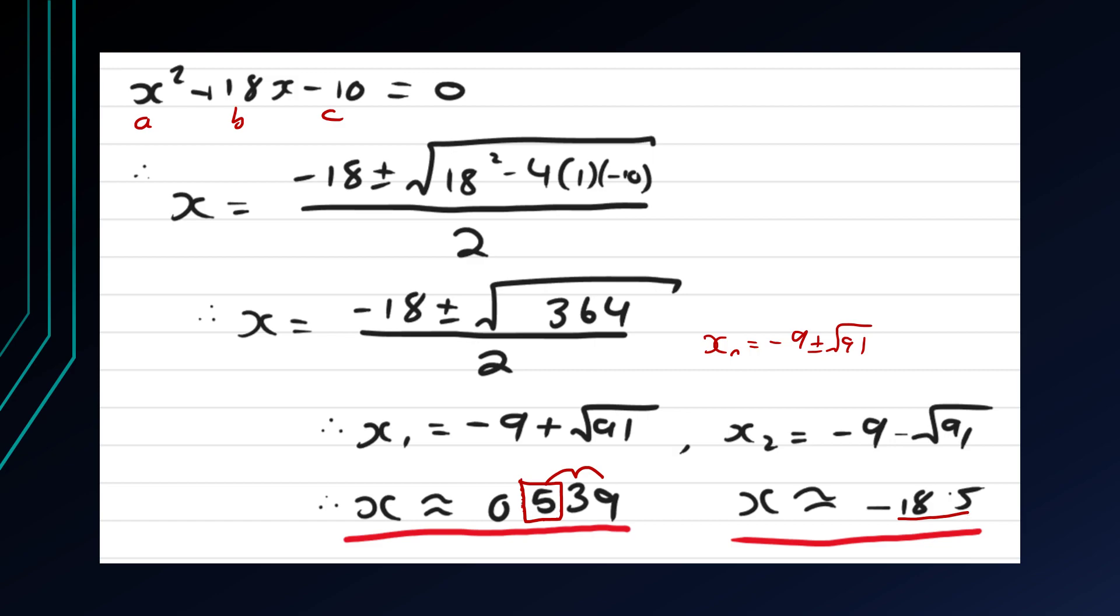These are actually irrational as you should probably notice because root 91 doesn't simplify. So if this were to keep going, you get 0.5393920142. And on the other side, you get minus 18.53939201, going on forever. So when it says to write to three significant figures, you write to three significant figures.